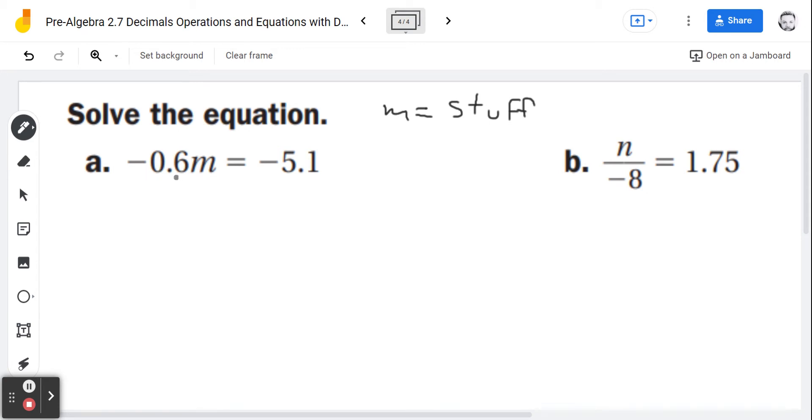What is this negative 0.6 times m? I said it. I was going to say, what is that 0.06 doing to the m? It's multiplying. What's the inverse of multiply? Division. So I'm going to divide this by negative 0.06.